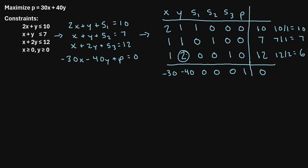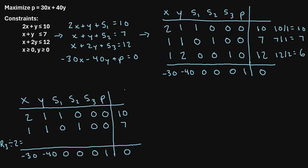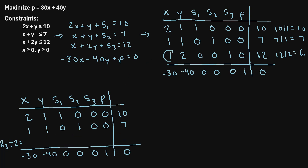To make this 2 equal to 1, we can just divide it by 2. Whatever we do to the pivot element, we need to do to every value in its row — so we divide every value in row 3 by 2. So 1 divided by 2 is one-half, 2 divided by 2 is 1, 0 divided by 2 is 0, 0 divided by 2 is 0, 1 divided by 2 is one-half, 0 divided by 2 is 0, and 12 divided by 2 is 6. This is our updated tableau.